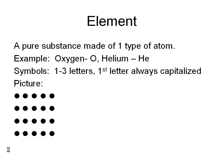What I have here is a couple key points on elements. If you're just looking over this, remember an element is a pure substance. It's always going to be made of one type of atom. Some common examples are going to be oxygen, the symbol O, helium with the symbol He.